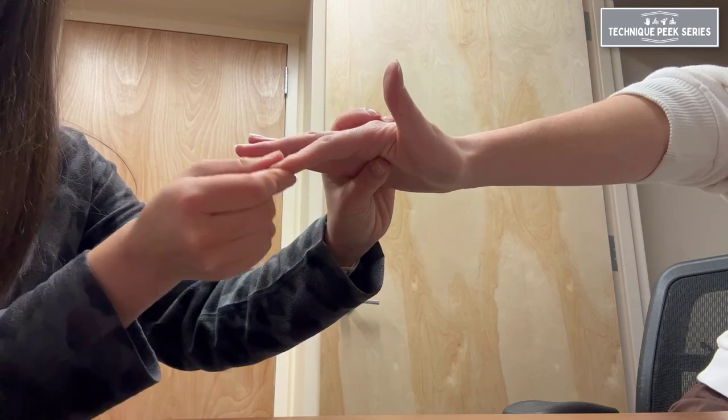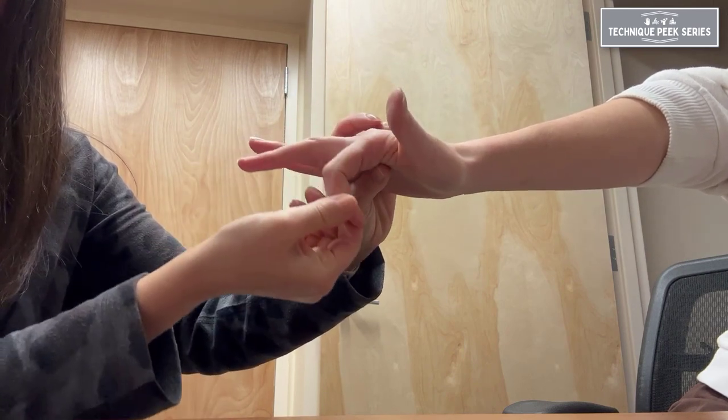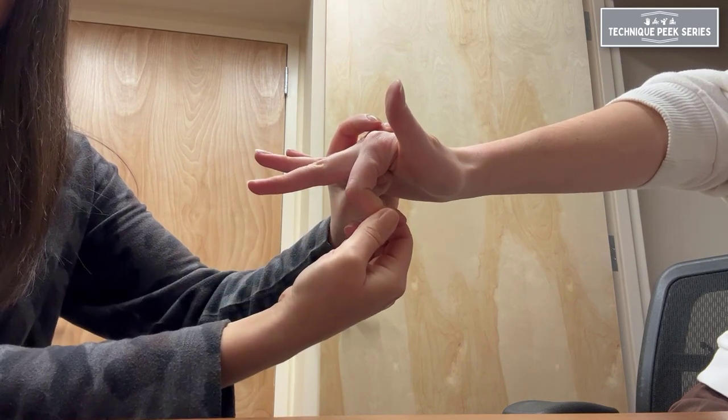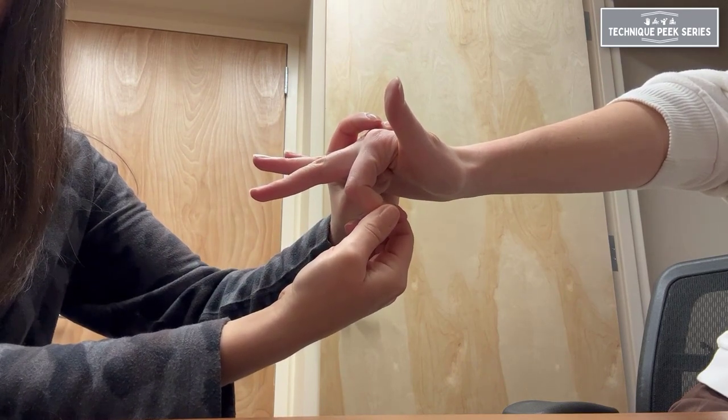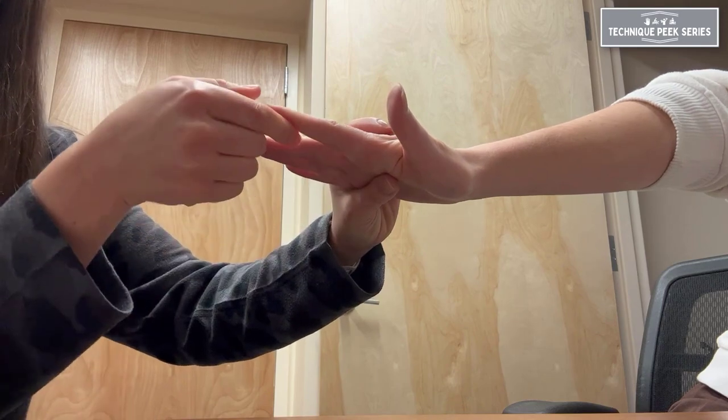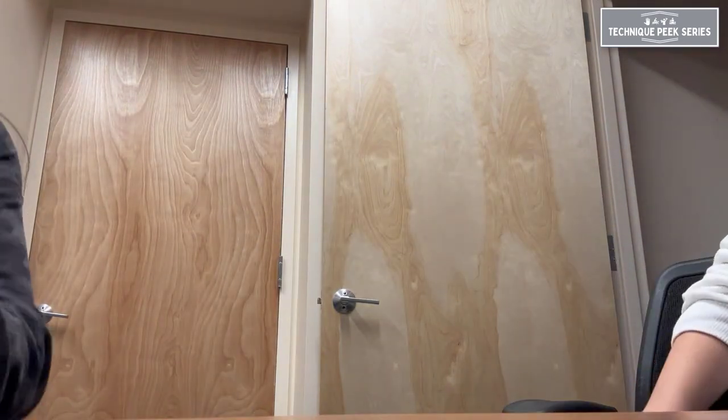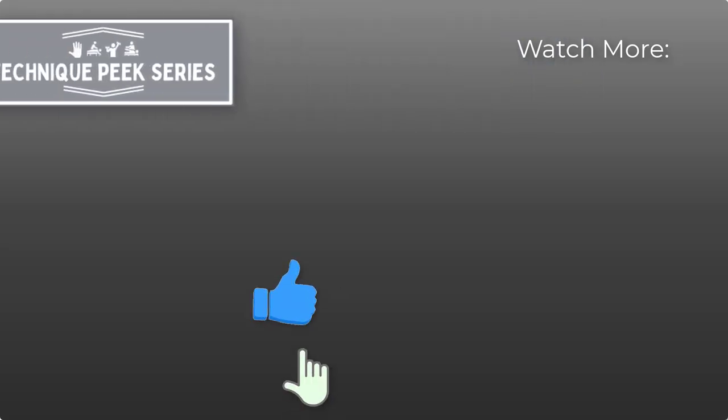If IP joint motion is greater with the MCP joint extended and less with MCP joint flexion, that's indicative of extrinsic tightness.